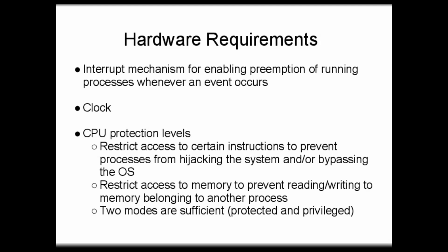First of these is an interrupt mechanism for enabling preemption of running processes whenever some kind of event occurs. We have to have a way of stopping a process, handling an event, and then restarting the process. We need to have a clock so that we know how long the process has been running, and we need to have CPU protection levels to restrict access to certain instructions to prevent processes from hijacking the system or bypassing the operating system. We also need to restrict access to memory to prevent reading and writing to memory that a particular process does not own.